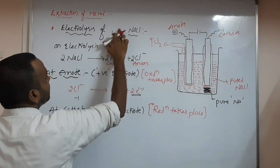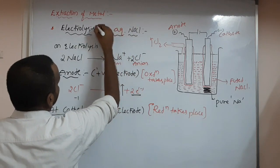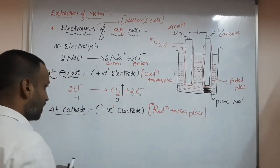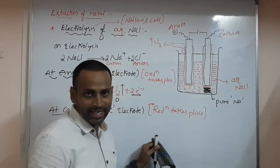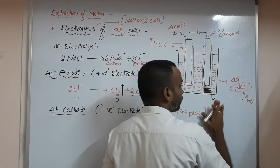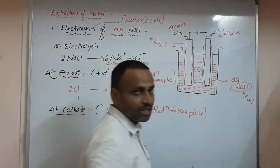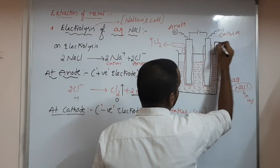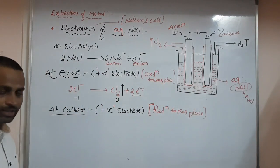Electrolysis of aqueous NaCl is called Nelson's cell. Same diagram, but instead of fused NaCl, aqueous NaCl is taken — NaCl in water. In previous, sodium metal was deposited at cathode. That won't happen here. H₂ gas will come out instead. I will tell you the reason.